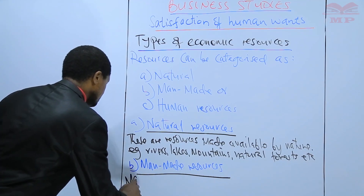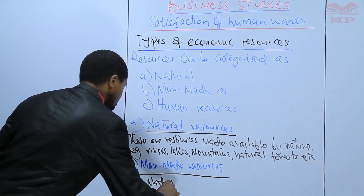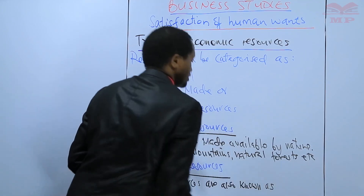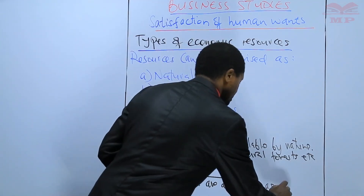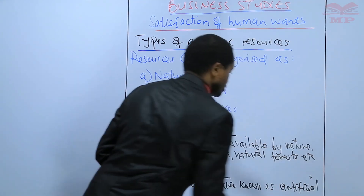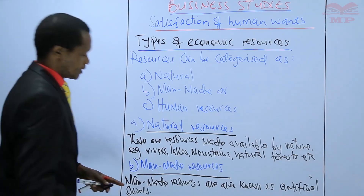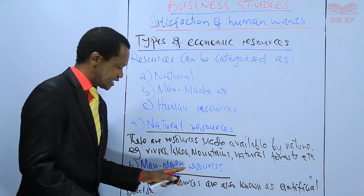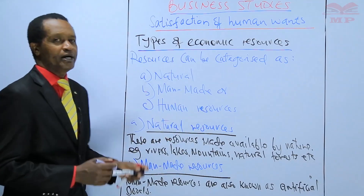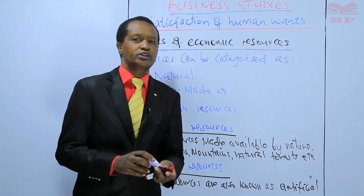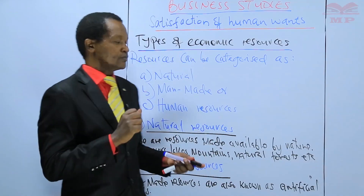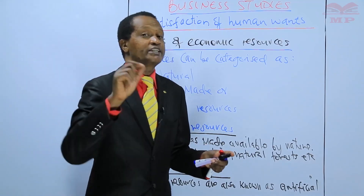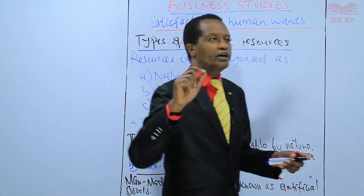Learners, man-made resources are also known as artificial goods. As the name suggests, man-made resources are resources that are made by man. They are created by human beings to be used in satisfying their wants.